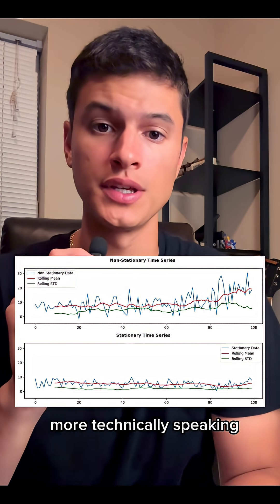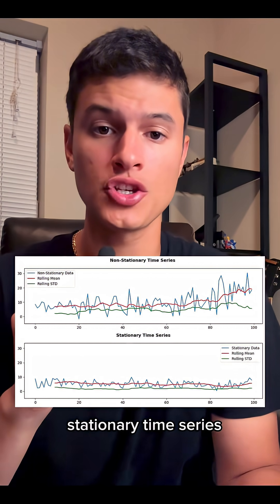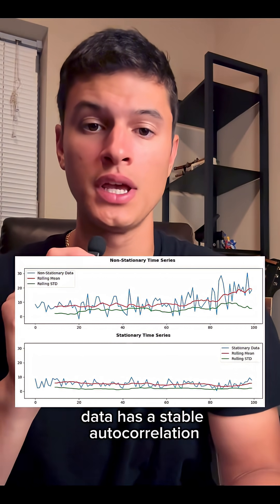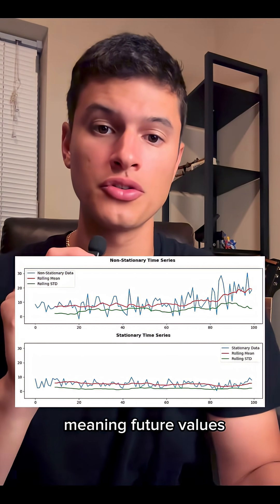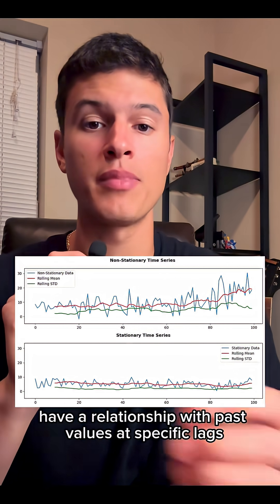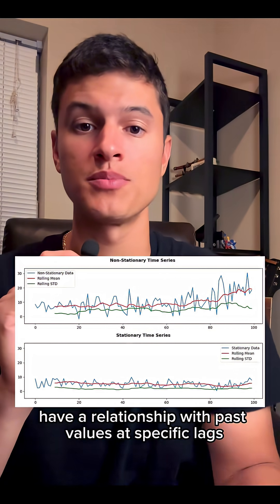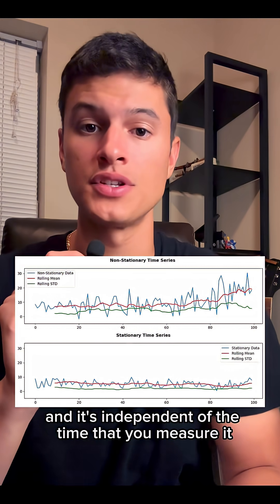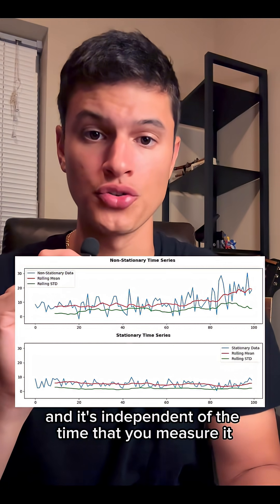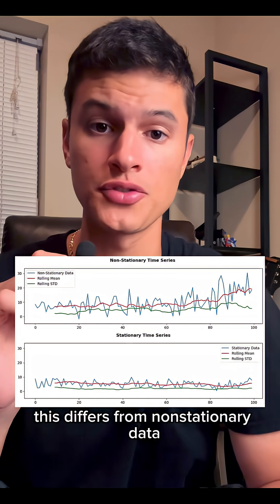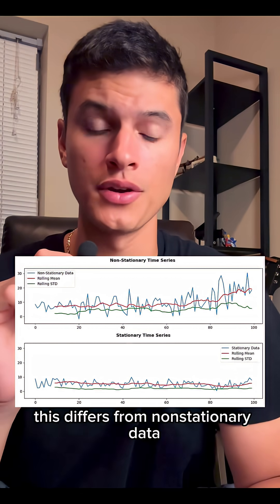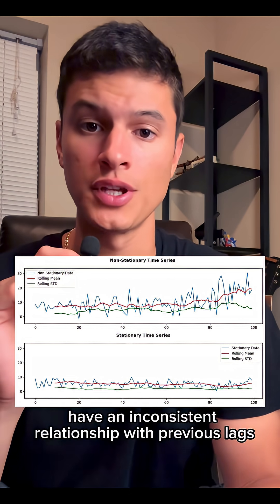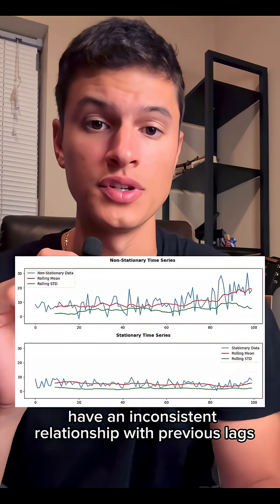More technically speaking, stationary time series data has a stable autocorrelation, meaning future values have a relationship with past values at specific lags, and it's independent of the time that you measure it. This differs from non-stationary data where future values have an inconsistent relationship with previous lags.